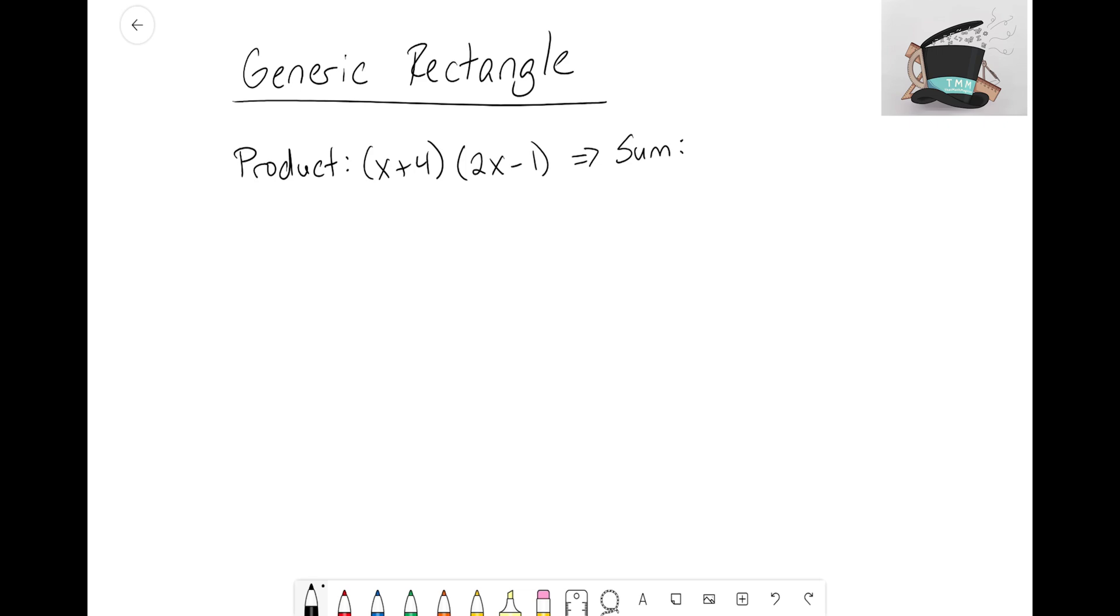Instead of building this out with algebra tiles, let's figure out how we can use this generic rectangle. The first step is to build out a generic rectangle. It doesn't matter which of these terms you put as the first side—you could write (x+4) for the height or (2x-1). It truly doesn't matter which one you use first.